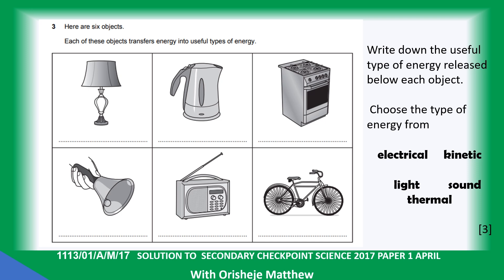Here are six objects, each transferring energy in a useful form. A lamp produces light energy. An electric kettle produces thermal energy. Cooking gas produces thermal energy. A bell produces sound energy. A radio produces sound energy. A bicycle produces kinetic energy.